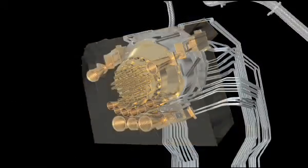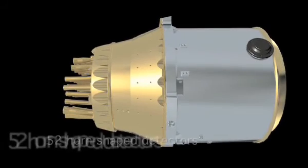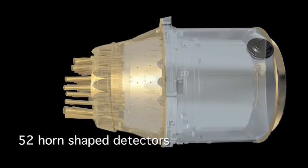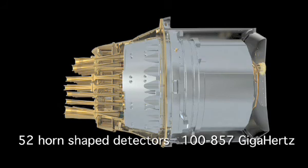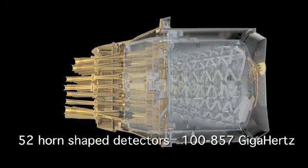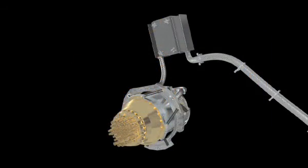The high-frequency instrument is an array of 52 volumetric horn-shaped detectors that convert radiation into heat. The detectors work in six frequency channels, centered between 100 and 857 GHz. This state-of-the-art instrument is like no other currently operating in space.